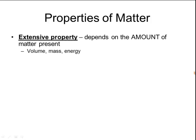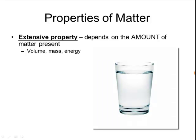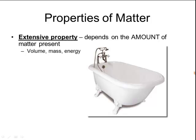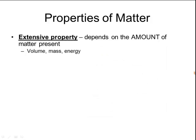All matter has distinct properties, and there are two major types. An extensive property depends on the amount of matter present. Volume is an example of an extensive property, as are mass and energy. Think about a container of water — a glass of water has a certain volume, which is very different from a bathtub of water. If I have more water, it's going to have a bigger volume and a bigger mass. A helpful memory trick: pair the word 'extensive' with 'extra' — if you have extra quantity, you'll have extra volume and extra mass.